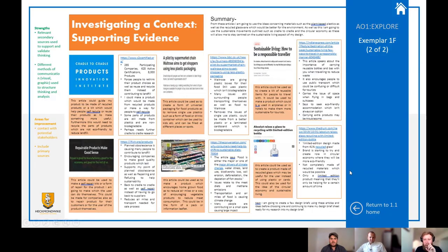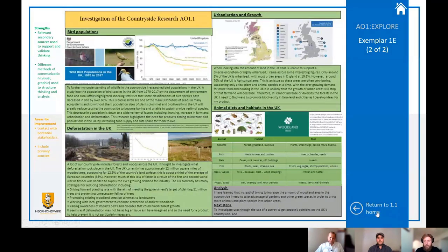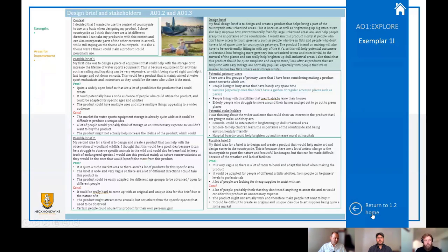We then moved on to our second video where we looked at some initial research by exploring the context even further. We'd looked up at least 10 different websites and tried to find information about the key topical area that we were looking at. For example, if we were doing the multi-purpose spaces context, you may have found out about small space living or the tiny house movement. You're looking for key pieces of data and using that data to bring together some analysis to say whether it's good or bad for your project, which ultimately feeds into your next piece of work.